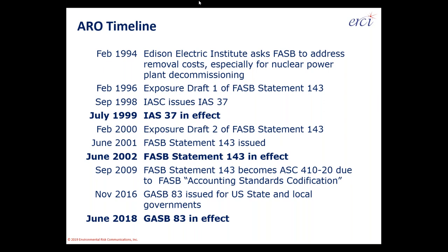On the governmental accounting side, the Government Accounting Standards Board, or GASB, issued Statement 83 back in 2016, and that took effect just a little over six months ago in June 2018. So with IAS 37, FASB 143 (later ASC 410), and GASB 83, three major standard setting bodies have identified what asset retirement obligations are, how to book them, how to disclose them, and how to document how the liabilities are being worked out.